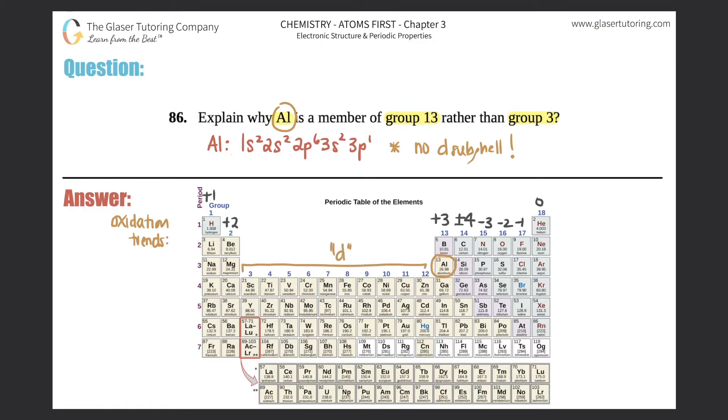This is where the d electron subshell is. That's why aluminum is in group 13 instead of group 3, because groups 3 through 12 are designated for the d subshell. All these elements have electrons in a d subshell, whether it's 3d, 4d, 5d, etc. Aluminum has no d.